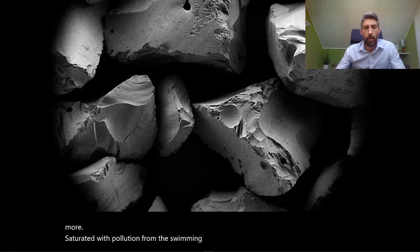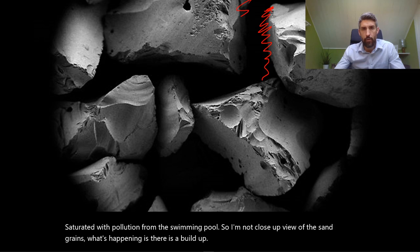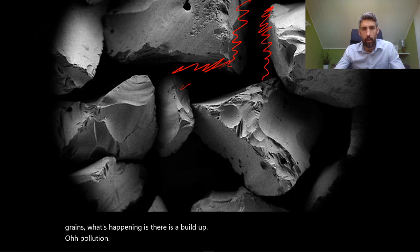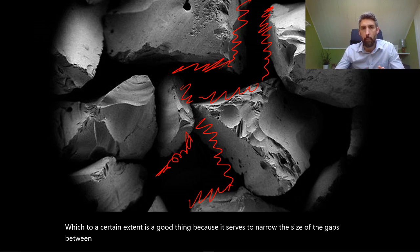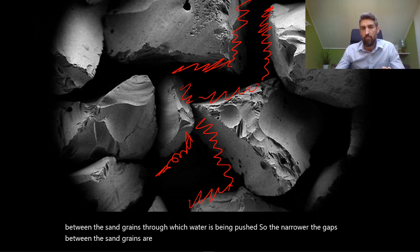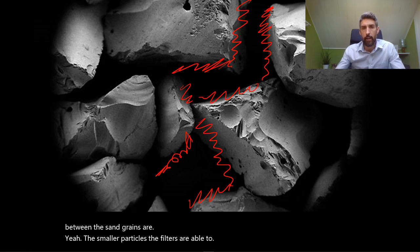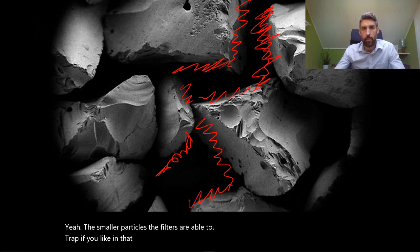On a close-up view of the sand grains, what's happening is there is a build-up of pollution happening, which to a certain extent is a good thing because it serves to narrow the size of the gaps between the sand grains through which water is being pushed. So the narrower the gaps between the sand grains are, the smaller particles the filters are able to trap.